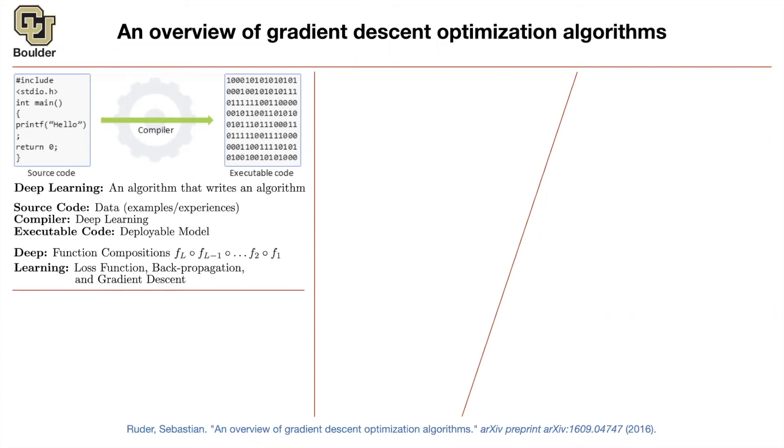For learning, you have to define a loss function. Basically, how much error your predictions or your model is making compared to the ground truth, which are your training data, your examples. Deep learning without backpropagation wouldn't exist. And backpropagation is a way of taking derivatives of your loss functions with respect to the parameters of your models. And once you have the gradients, you can do gradient descent to optimize your loss function. And once you optimize your loss function, you're going to end up with an executable code.